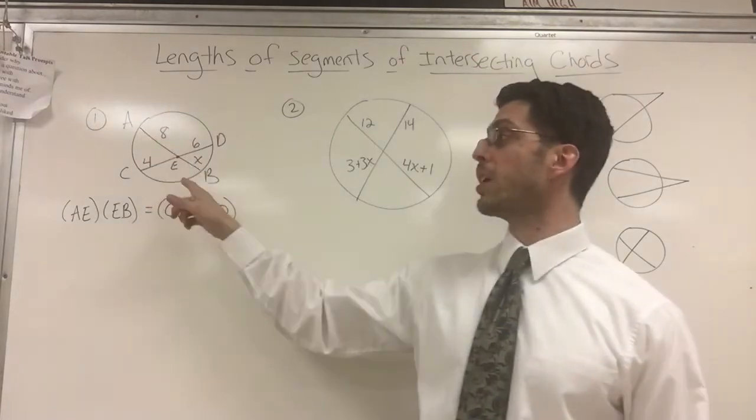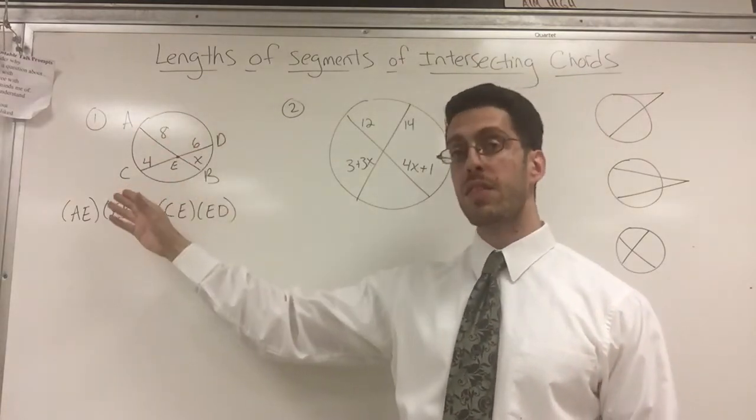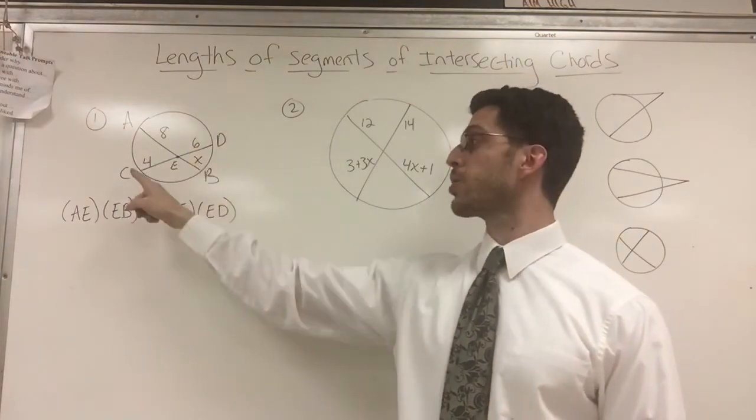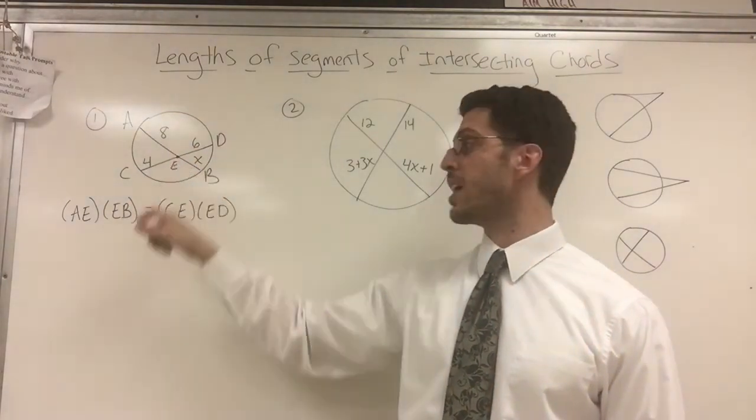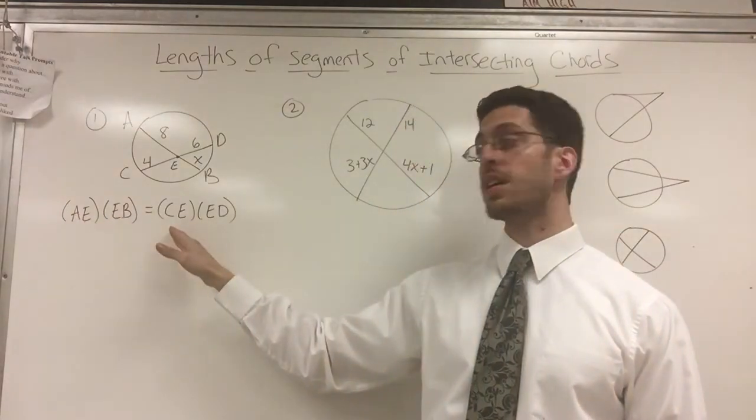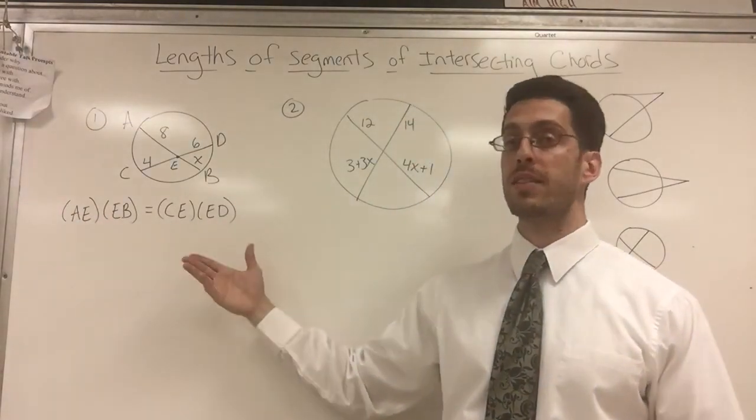Alright, so I'm looking at a circle. I'm looking at lengths of intersecting chords. Here's a chord AB. Here's a chord CD. They intersect at E, and the formula is AE times EB equals CE times ED. That's it.